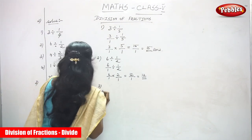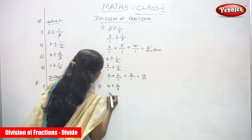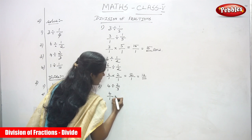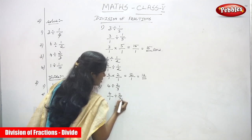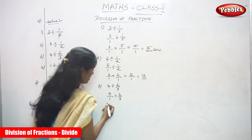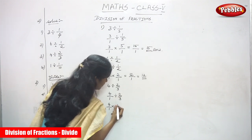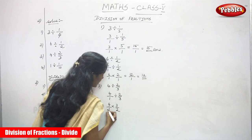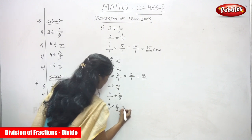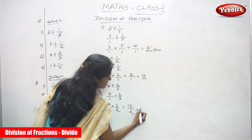Third sum: 4 divided by 2 by 3. 4 is a whole number — make it a fraction first. Write 4 by 1, division 2 by 3. 4 by 1 is the dividend and 2 by 3 is the divisor. Next step: 4 by 1 into the reciprocal of the divisor, which is 3 by 2. Multiply: 4 into 3 equals 12, and 1 into 2 equals 2, so 12 by 2 equals 6.